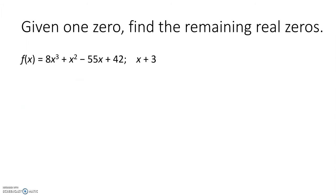Let's look at another one. In this example, we're given one of the zeros of a function, and we are asked to find all remaining real zeros. The first thing we'll need to do is to divide out this zero. You can use synthetic or long division. I'm going to use long division in this example. So we've got 8x³ + x² - 55x + 42. I made sure I did not need any placeholders.